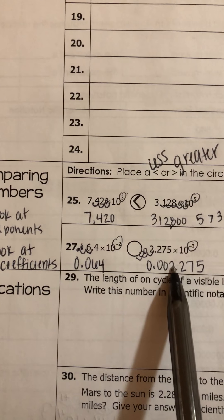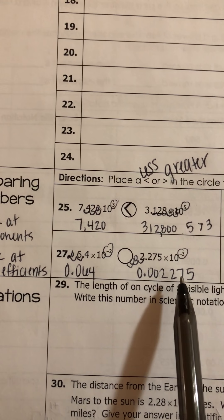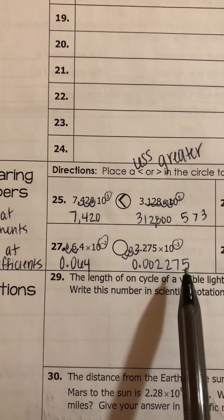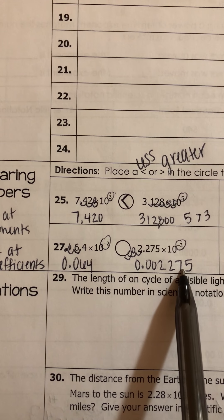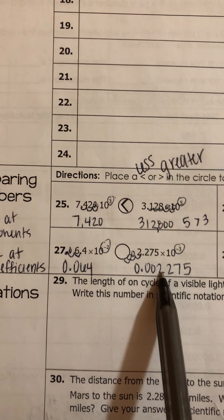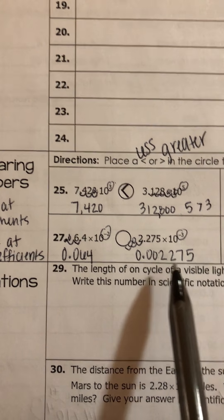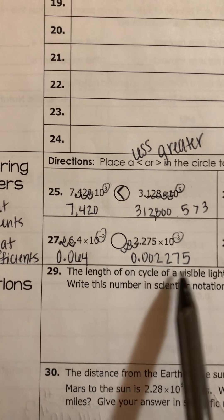thousandths, ten thousandths, hundred thousandths, millionths. So I have 2,275 millionths. This is a really tiny number.